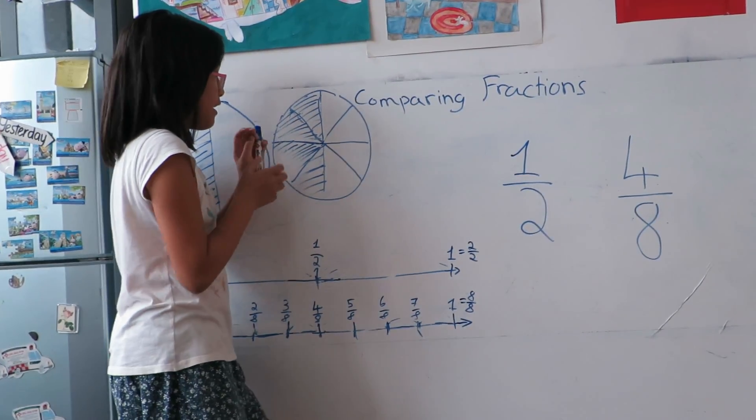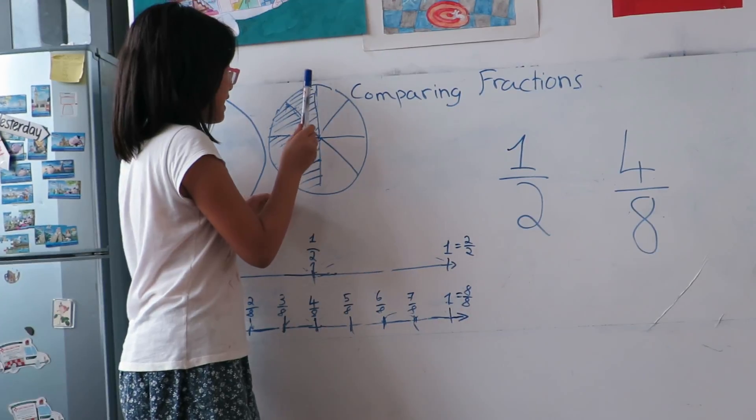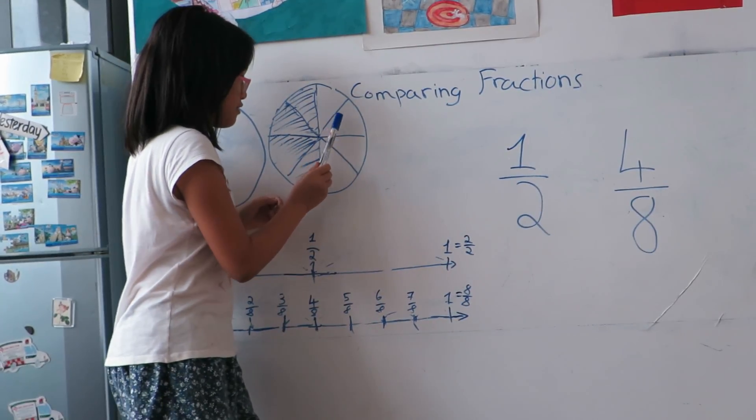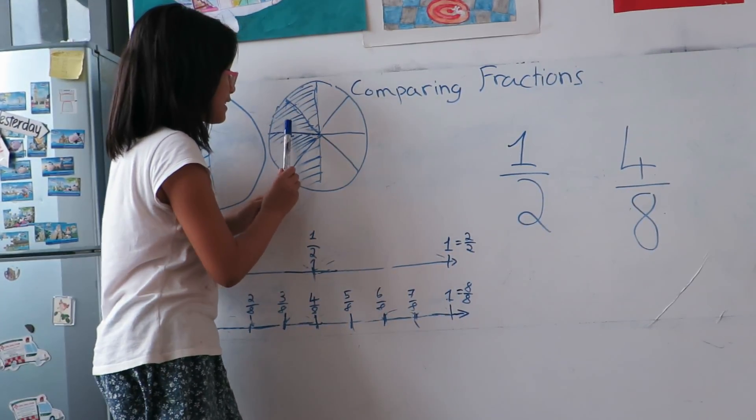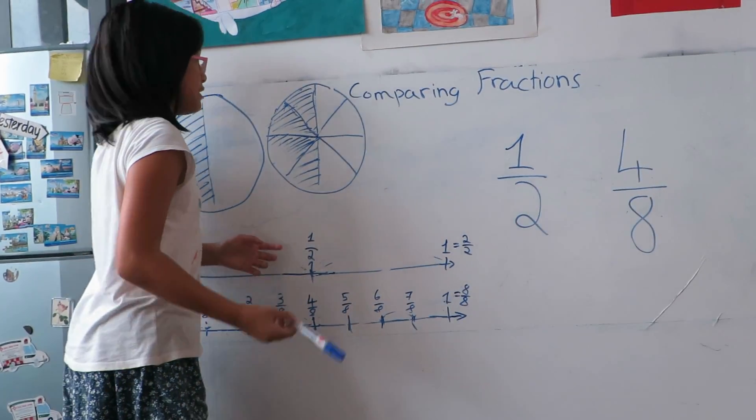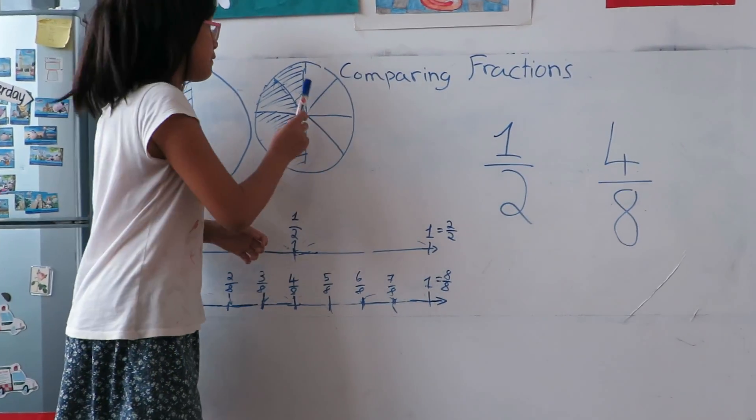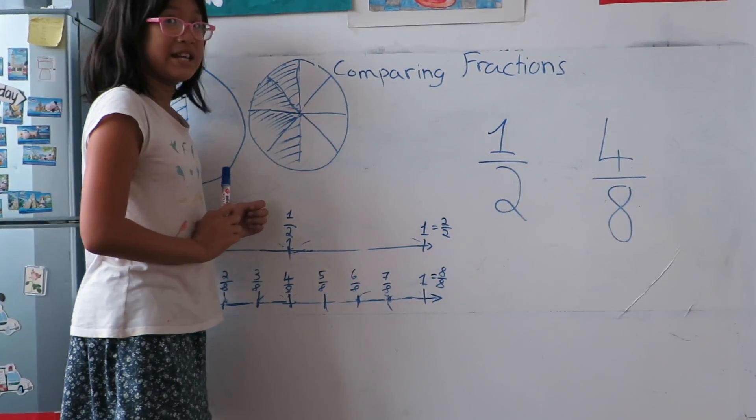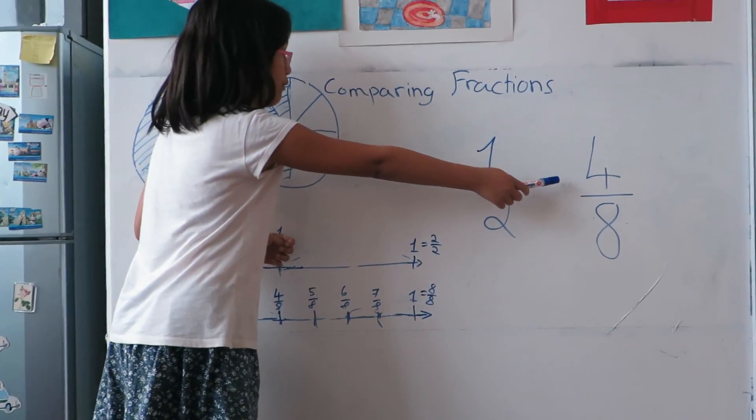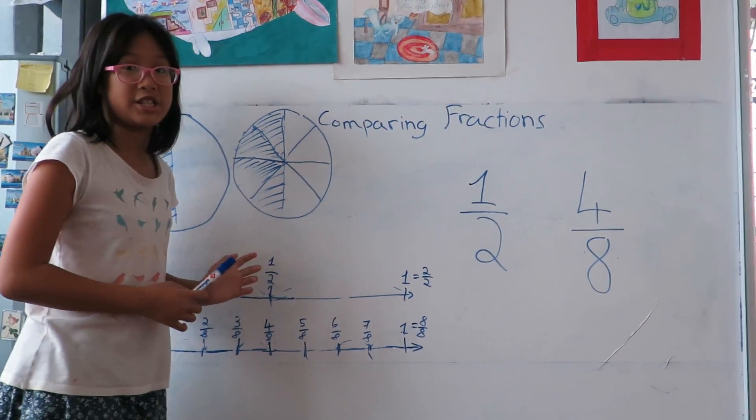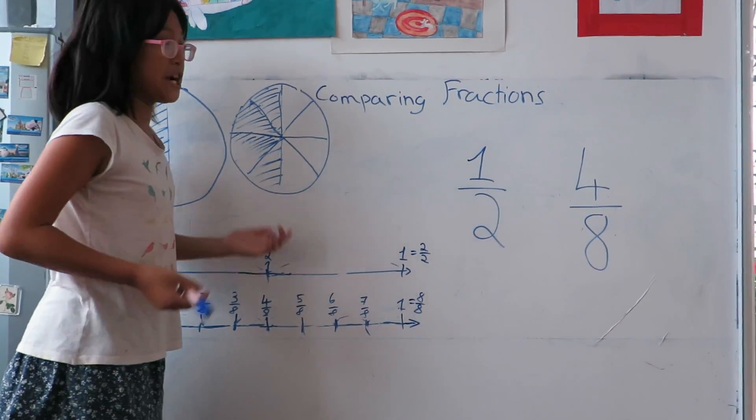And here I've cut this cake into one, two, three, four, five, six, seven, eight—eight equal pieces. What's the fraction for the four shaded parts? Four eighths is the fraction for the shaded parts.